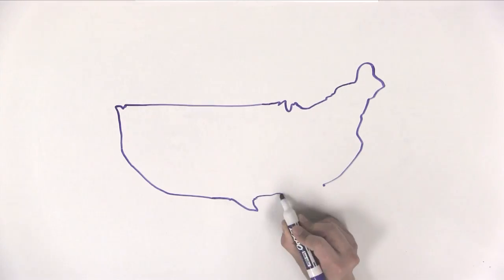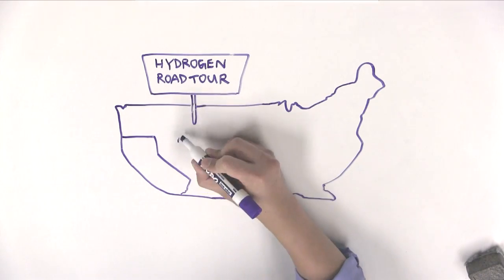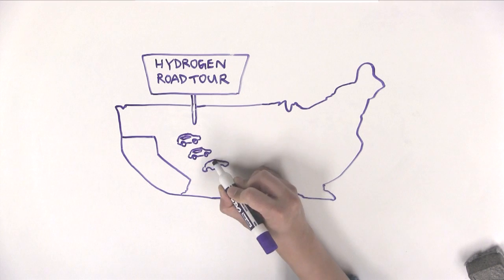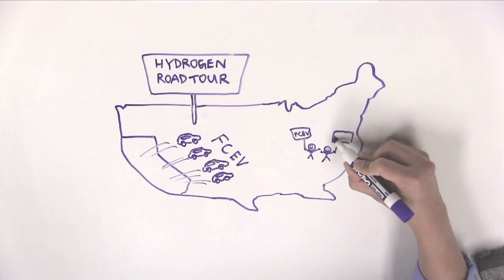Along with a bunch of other fuel cell electric vehicles, we drove across the United States not once, but twice to let tens of thousands of people see just how close to being ready we were. People were always glad to see us.